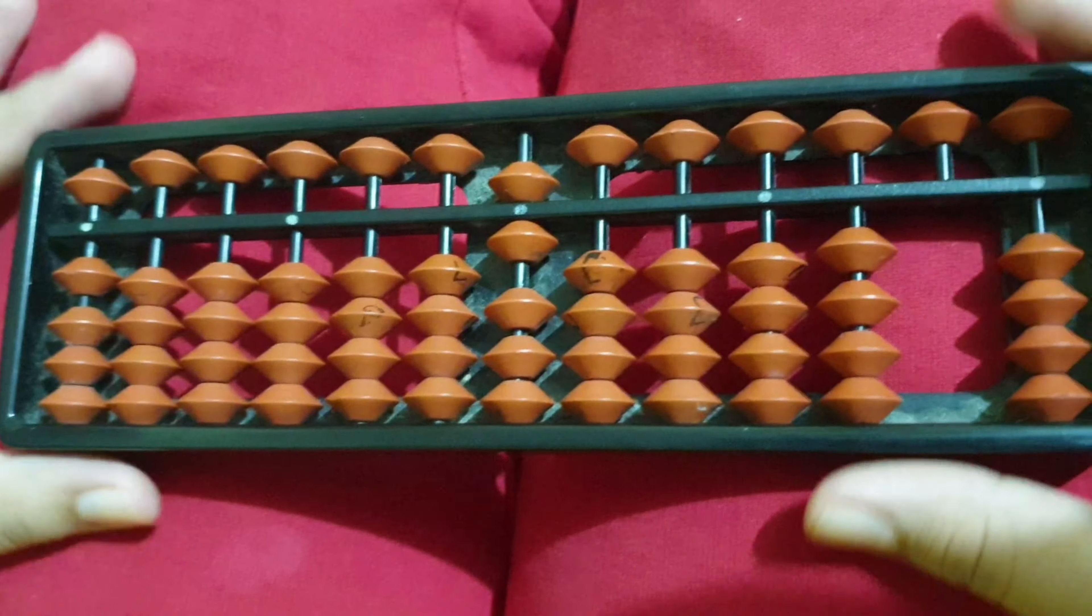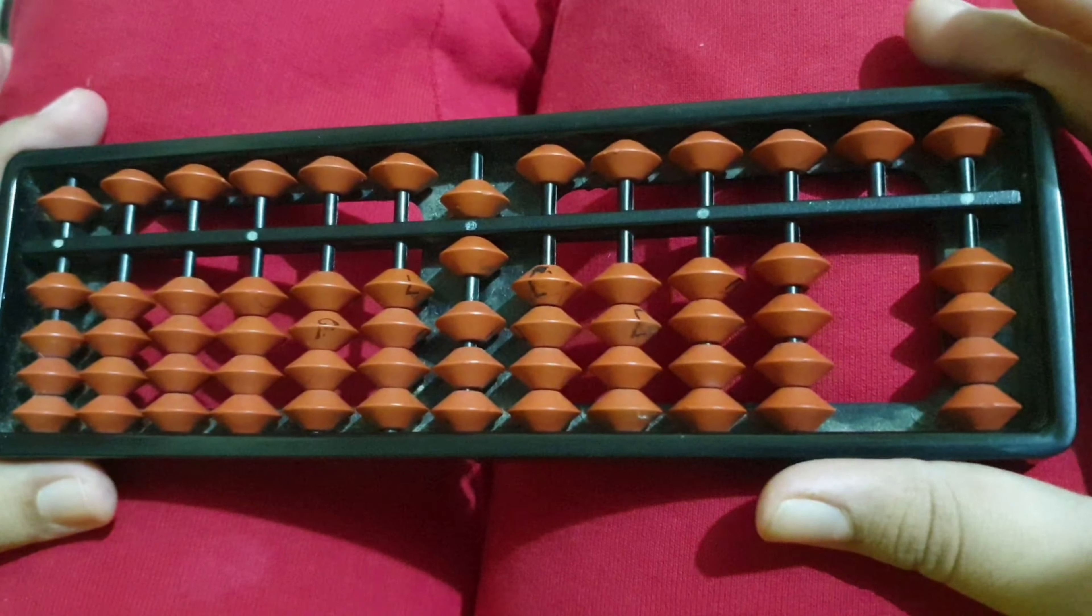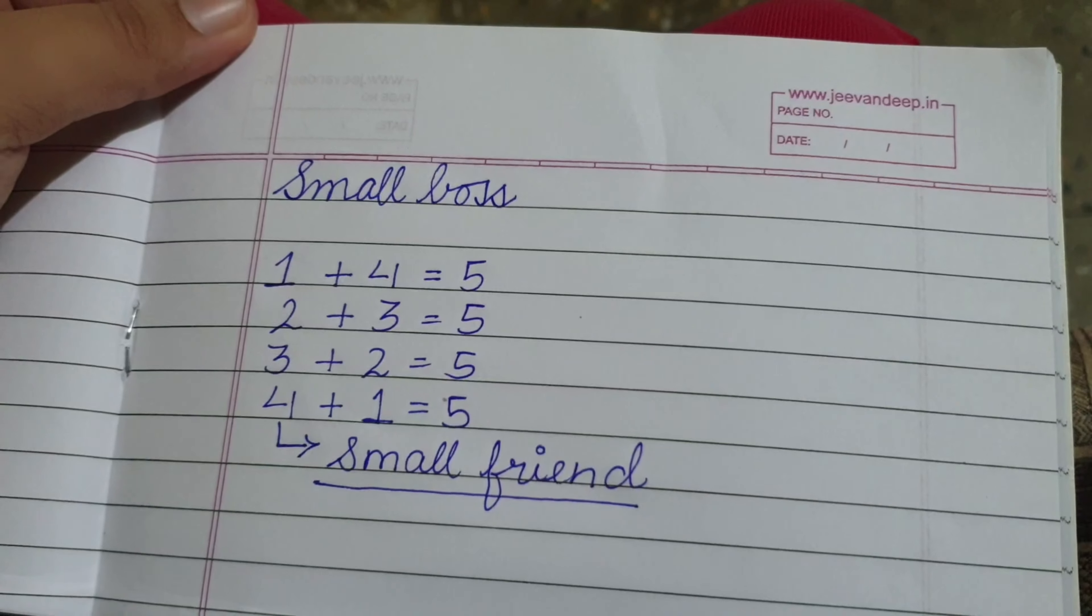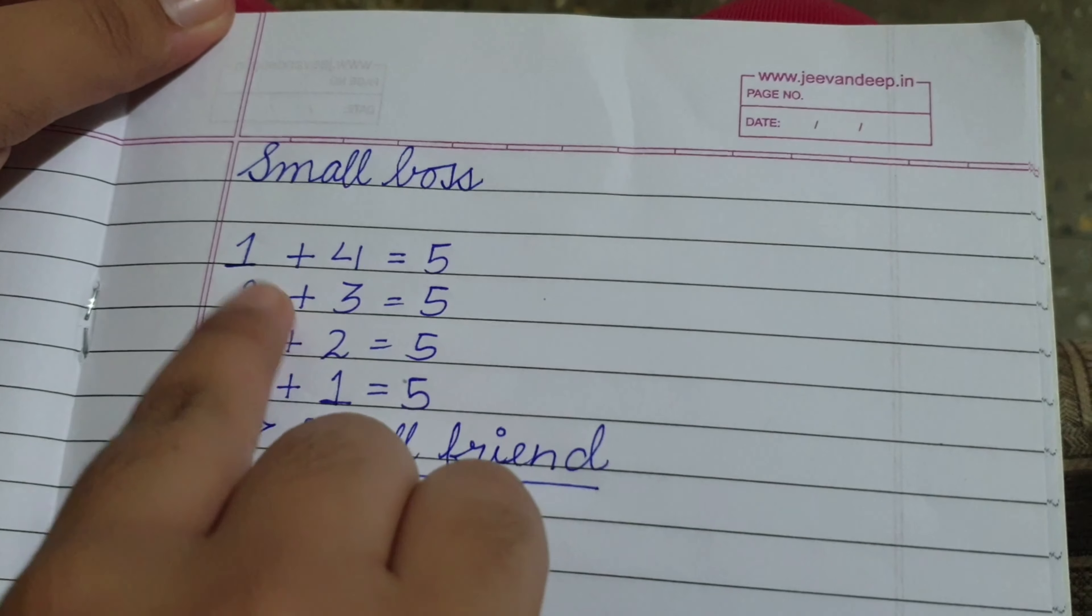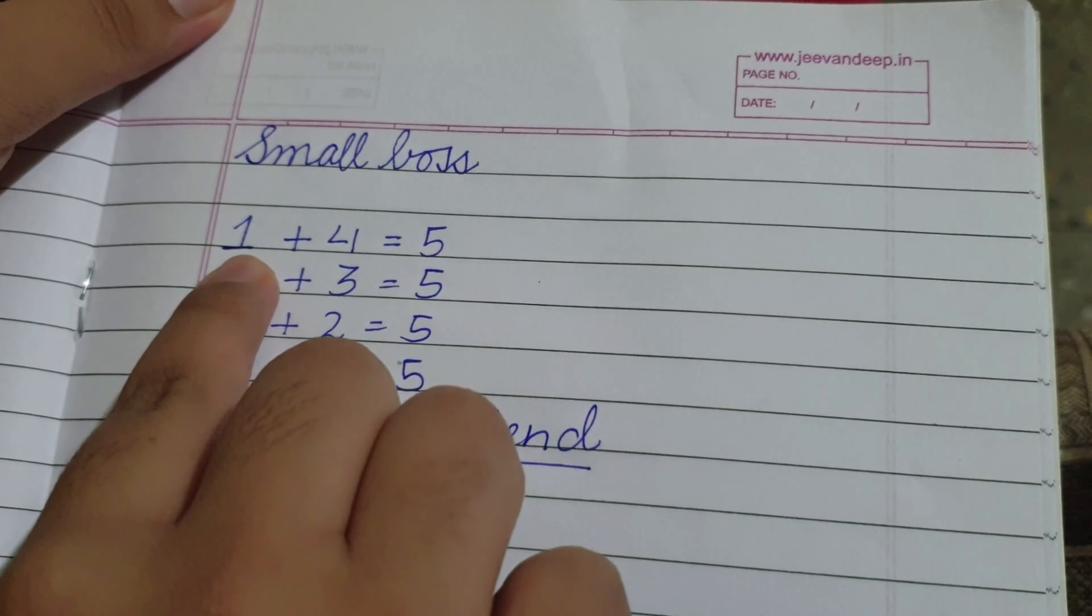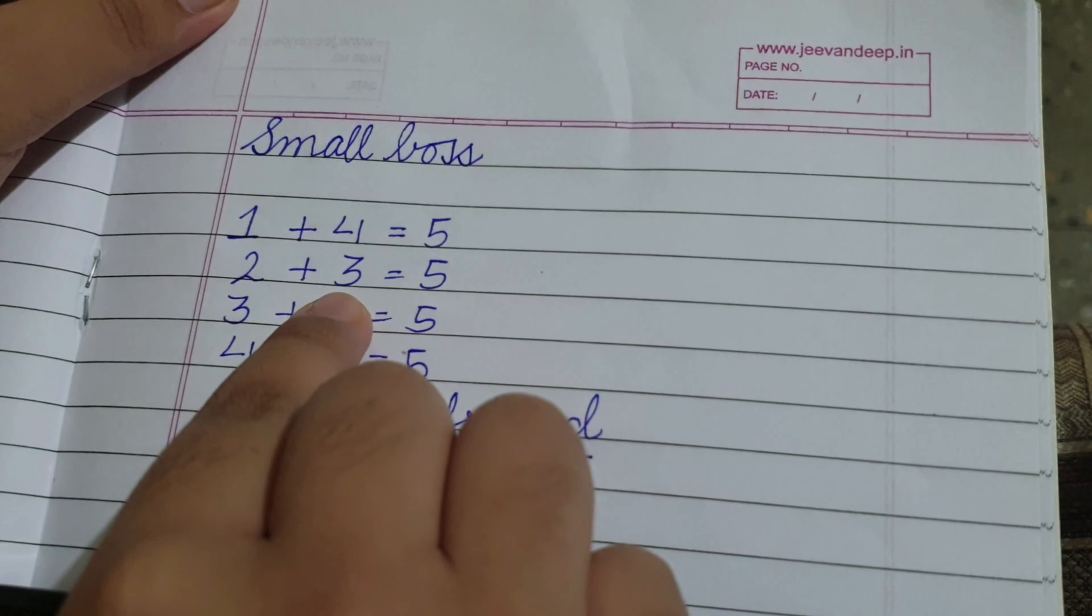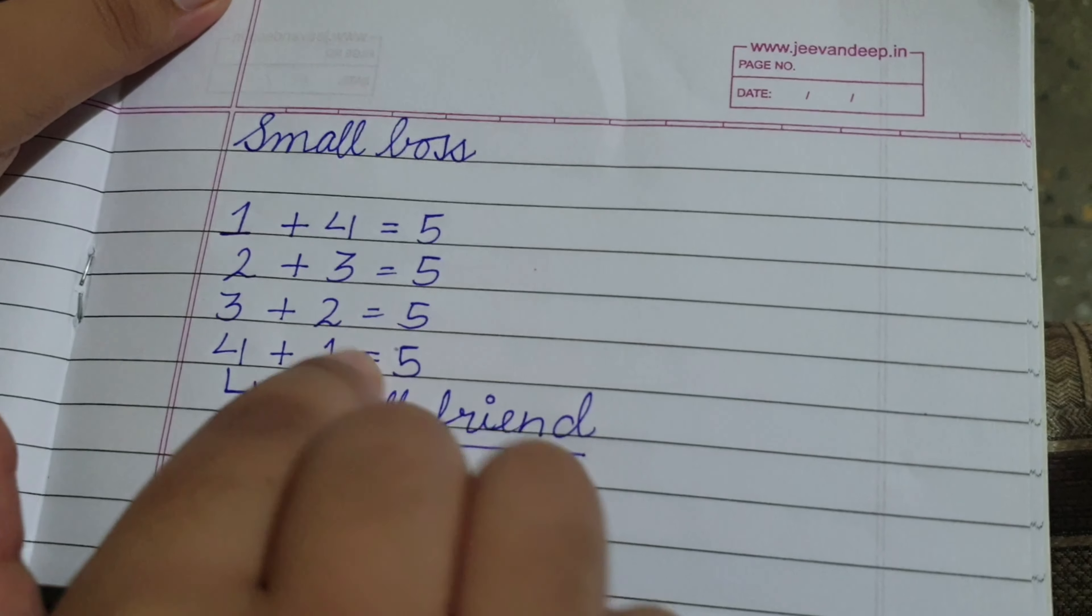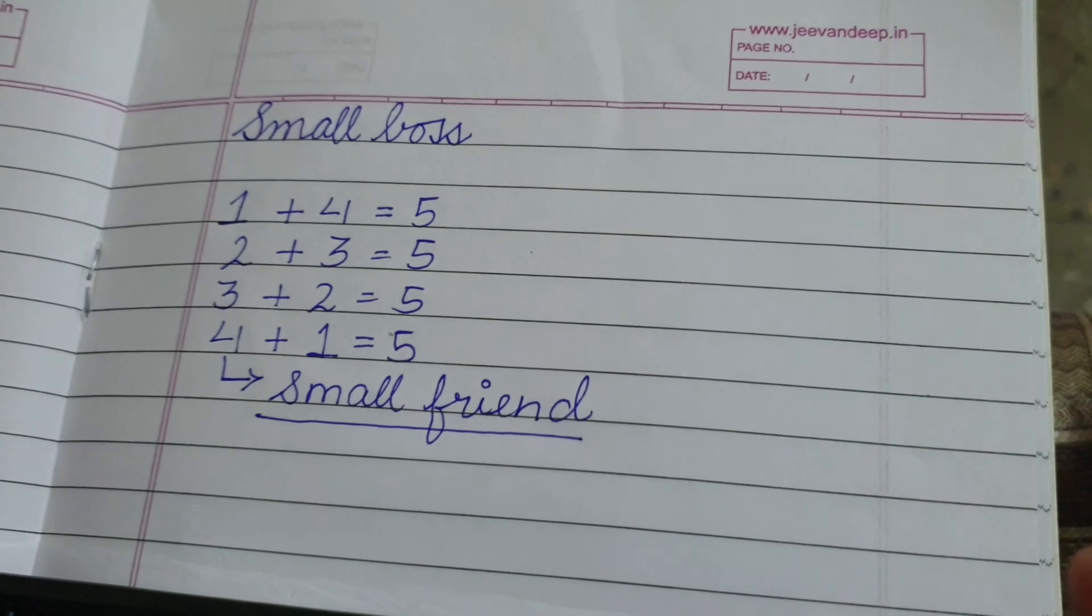There is a thing called the small boss that is working over here. So let's study about small boss. 5 is a small boss and the two numbers that add up to 5 are known as small friends. Like 1 is a small friend of 4, 2 is a small friend of 3, 3 is a small friend of 2, and 4 is a small friend of 1.